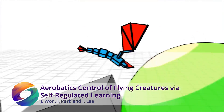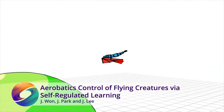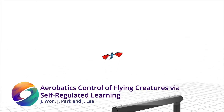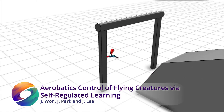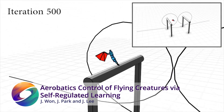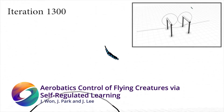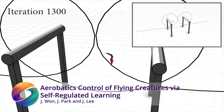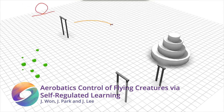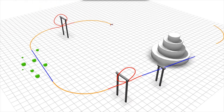Trying to simulate creatures performing aerobatic skills such as sharp turns, rolling, soaring and diving is a difficult task. In this simulation, the dragon learns by combining deep reinforcement learning with a self-regulated approach, allowing the creature to take control over the process. In this way, our dragon will learn advanced skills autonomously and reduce the computational cost of such a task.